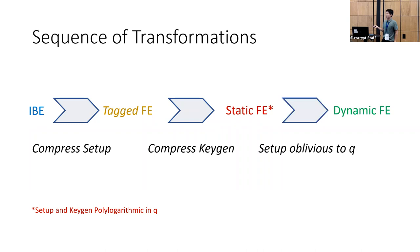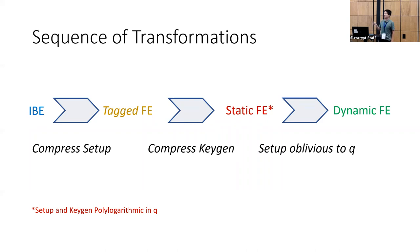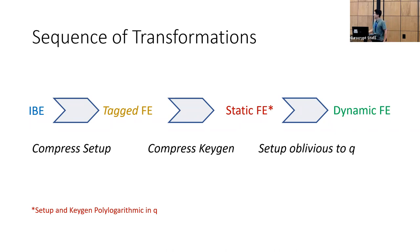Finally, once both setup and keygen are efficient, we can in a single step go to dynamic functional encryption. The main change here is a syntactic one: we move the collusion bound from the setup algorithm to the encrypt algorithm. That was the high-level roadmap; I'll go over each step in a bit more detail.